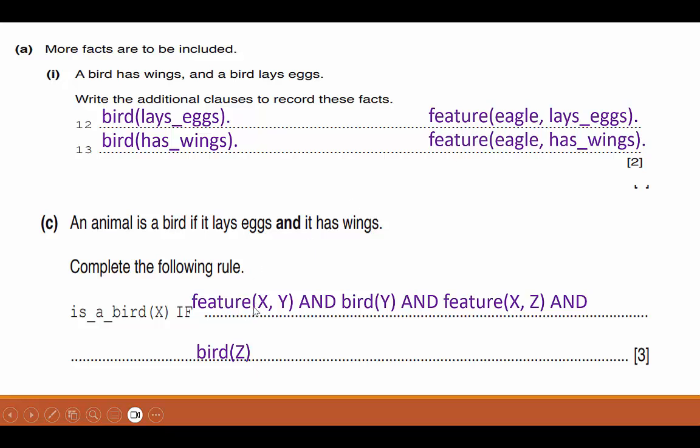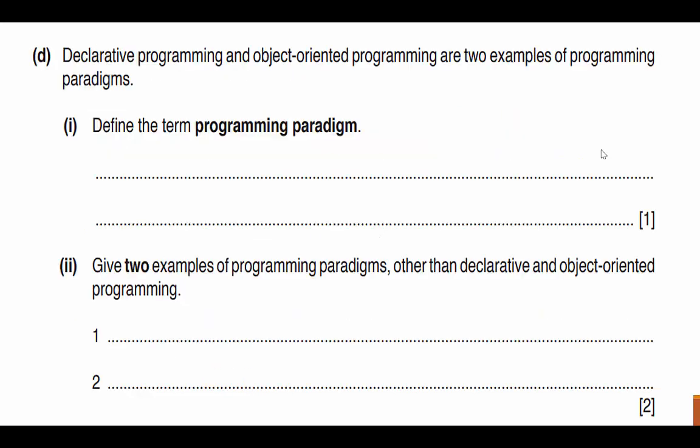Then we've got to check to make sure that this feature, Y, is a feature of a bird. Well, then that's true. So now we've got to check the second feature. So not too bad there. And that's another way to pick up three points on your exam. Let's take a look at the last part of this section of the test. So this is part D, the last part of the declarative programming section of the exam.